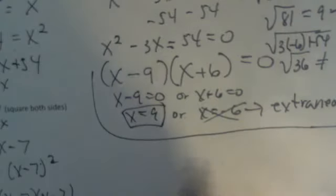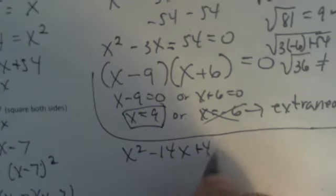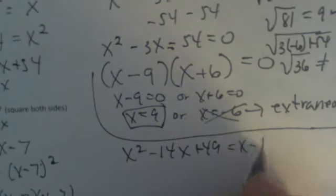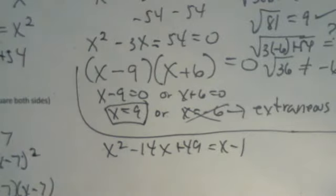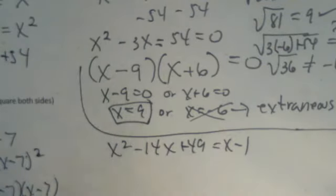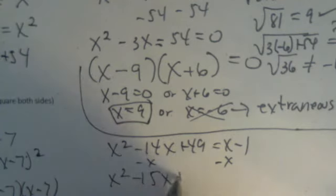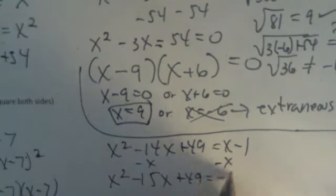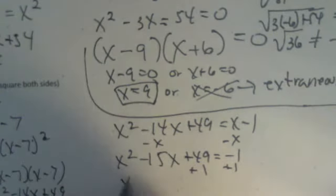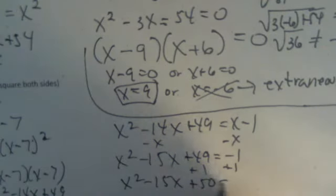So I am going to, again, interchange sides because I want my square on the left and I need to get all my x's and numbers on the left side and set it equal to zero. So if I subtract an x, I get x squared minus 15x plus 49 is negative one. Then I add one. Then I get x squared minus 15x plus 50 is zero.